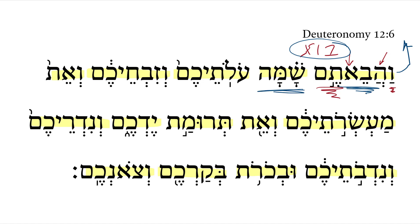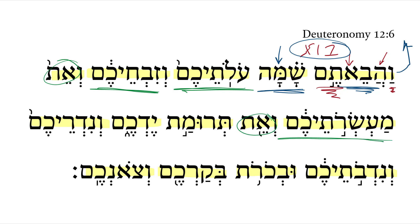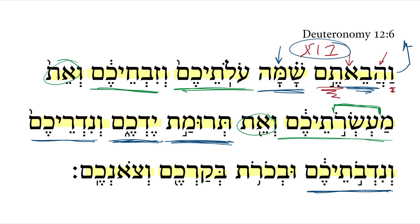So we get: 'and you shall bring there' — namely to that one place where the Lord will put his name, there to dwell. Here are all the things you will bring: your burnt offerings and your sacrifices. Here we get the direct object marker dropped in a couple of times. Your tithes — you might see the verbal root here related to giving a tenth. The produce of your hand, or the contribution of your hand. And your vow offerings and your free will offerings, and the first fruits of your herd and your flock.